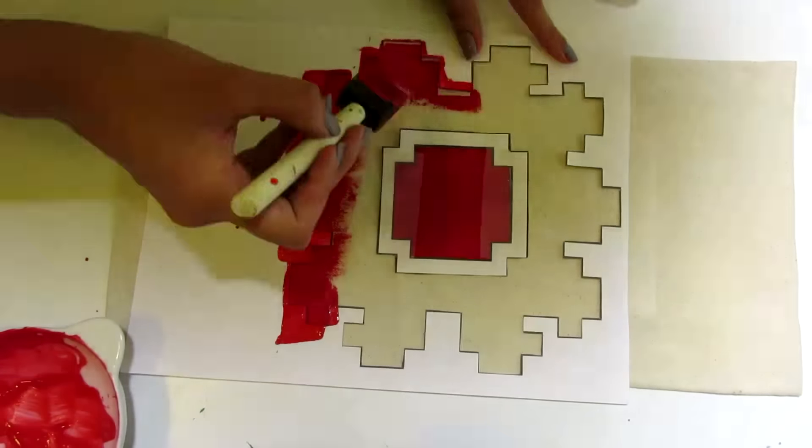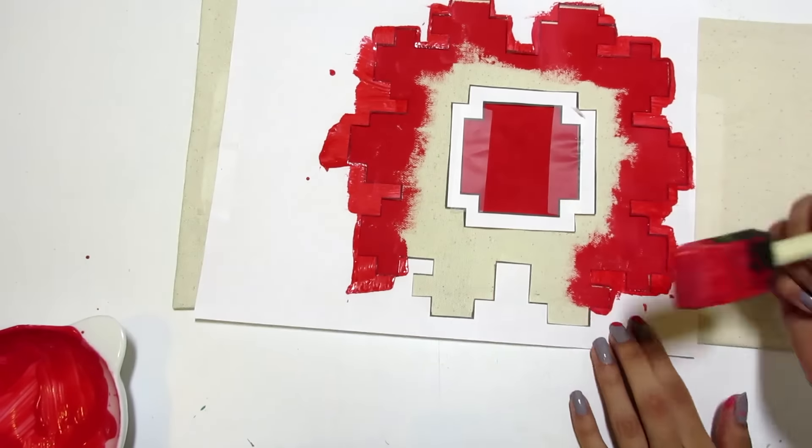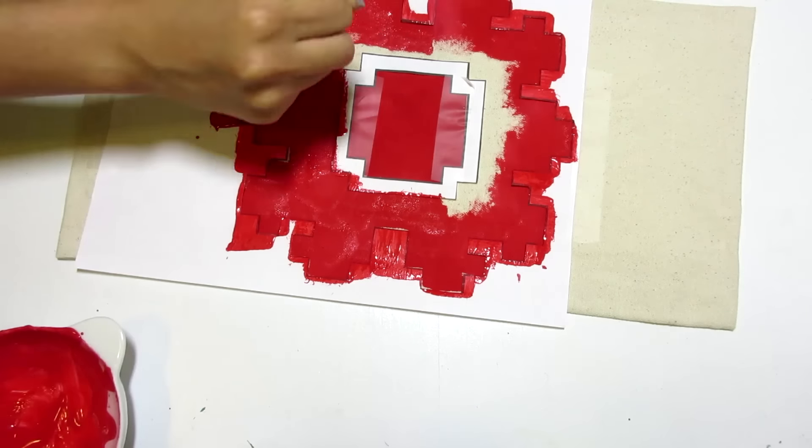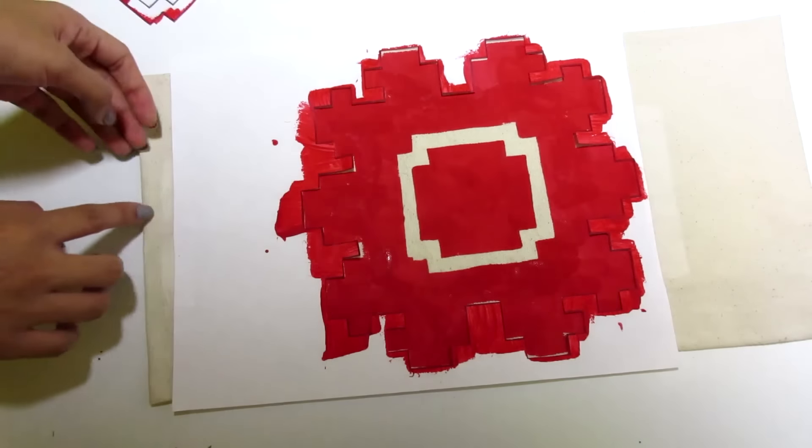Begin painting the rest of the flower, making sure to paint away from the paper and not towards it. I've found that using a dabbing motion around the edges made it a lot easier. Now that you're done painting, carefully remove the stencil.